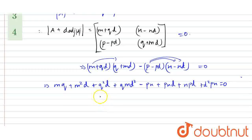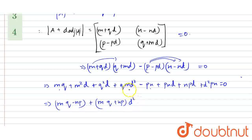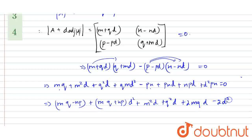Now I'm going to simplify this. Taking MQ minus NP outside, plus the D value terms — so NP and MQ with D — and taking D common outside gives MQ plus NP multiplied by D square. Plus M²D plus Q²D plus 2MQD minus 2D², which is equal to 0.